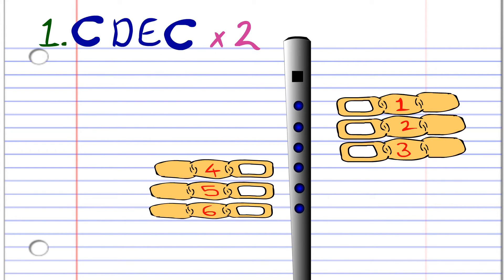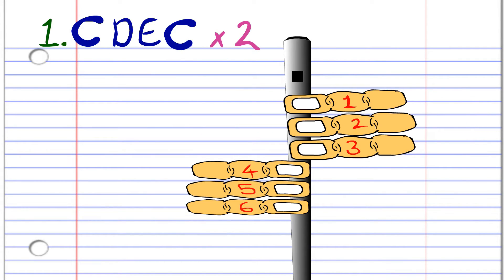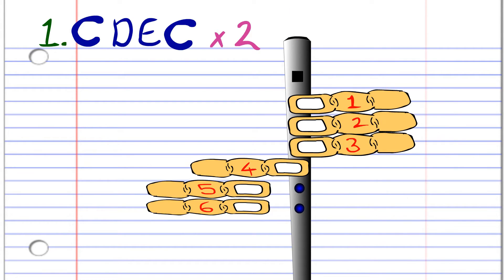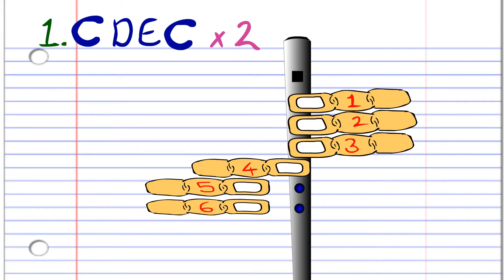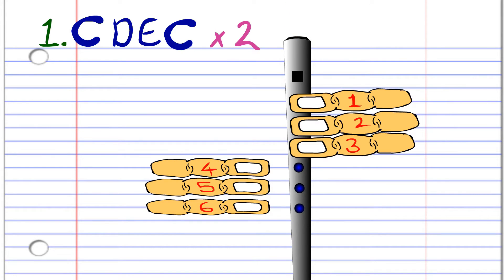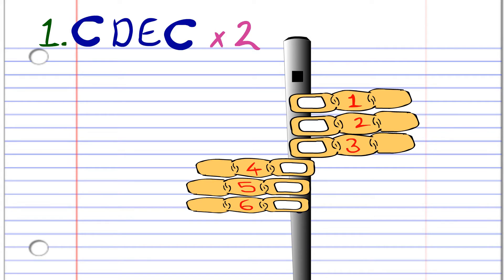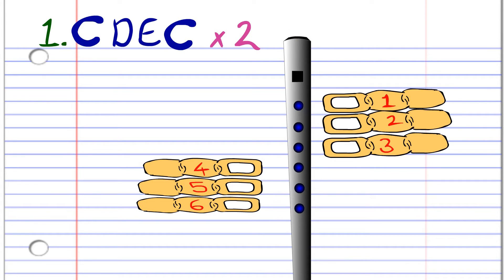Let's take a closer look at phrase one. First cover all six holes with fingers one to six and blow once. Then cover holes one to five with fingers one to five and blow once. Now cover holes one to four with fingers one to four and blow once. And finally cover holes one to six and blow once. Then repeat this phrase, and after some practice you should end up with something that sounds like this.